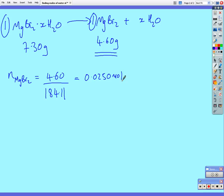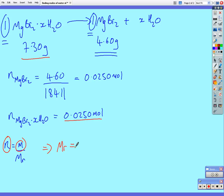It's 4.60 divided by its molar mass, again found from the periodic table. It gives us 0.0250 moles. Now, that means that the number of moles of the hydrated salt must be the same, because we've assumed it's all been converted to magnesium bromide in a one-to-one ratio. So, that is also equal to 0.0250 moles. Now, remember that the number of moles is equal to the mass divided by the molar mass. So, for the hydrated salt, we now know the number of moles. It's 0.0250. And we know the mass. It's 7.30 grams. So, if we now work out the molar mass, it's 7.30 divided by 0.0250, we get about 292.